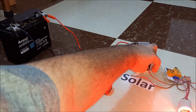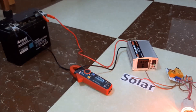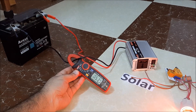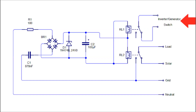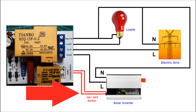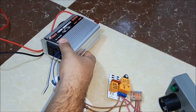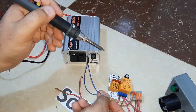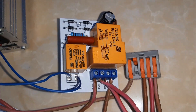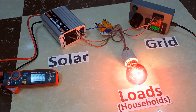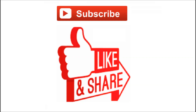Any inverter draws some current from the battery even with no load — that is called standby current. As you can see here, my inverter draws more than 500 milliamps with no load. To solve this problem, use the second relay: open your inverter and connect the relay contact in series with the inverter switch. As you can see, before a power outage the inverter draws zero amps from the battery.